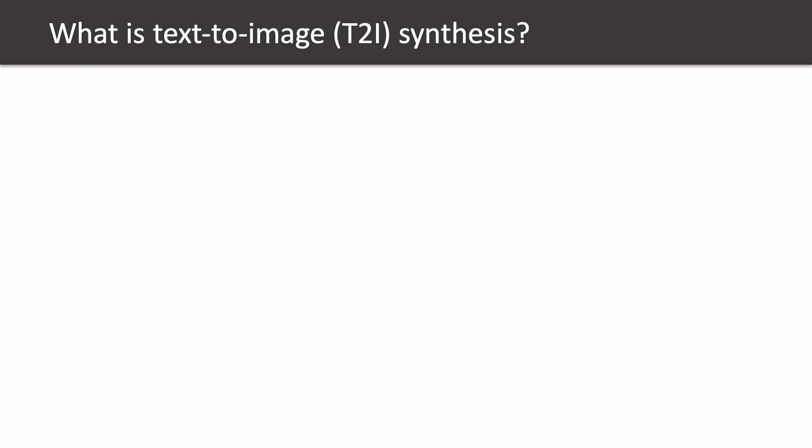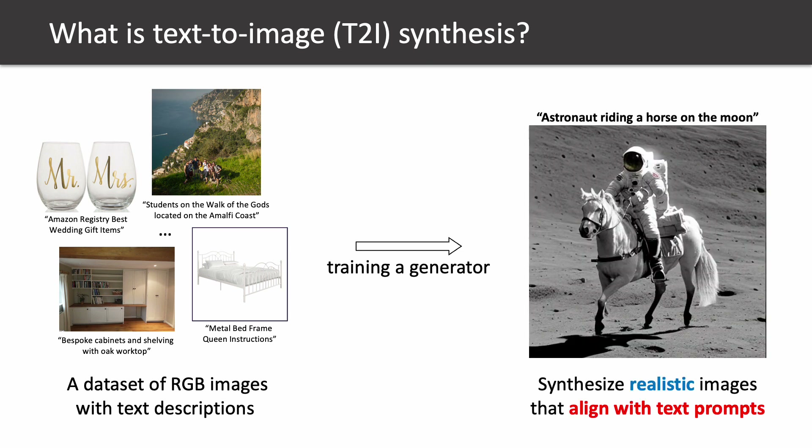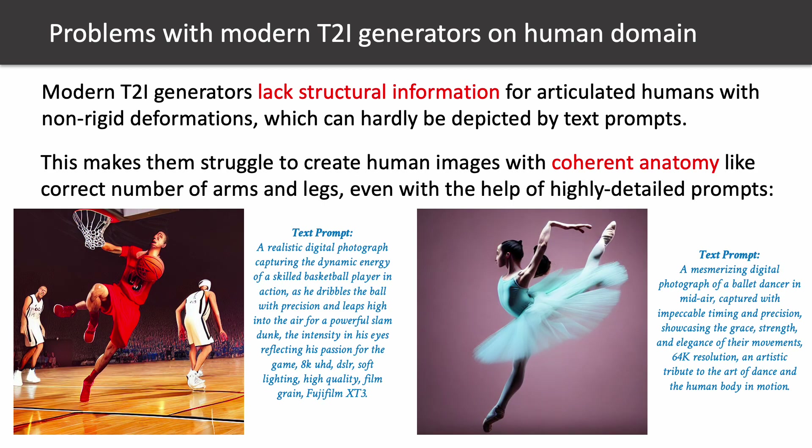So what is text-to-image synthesis? Given a dataset of RGB images with text descriptions, you want to train a generator which learns to synthesize realistic images that align with text prompts. Exemplar text-to-image generators like Stable Diffusion and DALL-E 2 fail to create high-quality humans. They lack structural information for articulated humans with non-rigid deformations, which can hardly be depicted by text prompts, making them struggle to create human images with coherent anatomy like the correct number of arms and legs, even with highly detailed prompts.